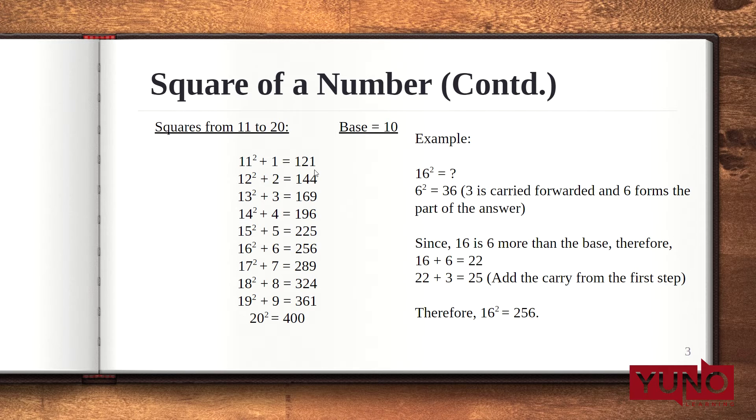So, square of 1 is 1. Now, to get the left side of the answer, add 11 plus 1. That is 12. So, the square of 11 is 121.